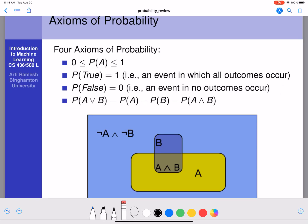Let's go back to the Venn diagram to understand the sum rule. We have P of A is equal to P of A and B plus P of A and not B.